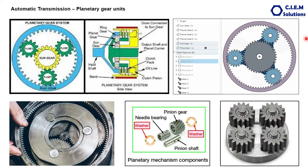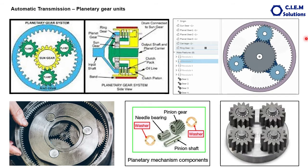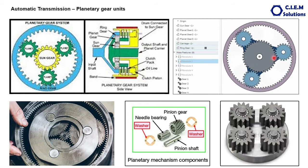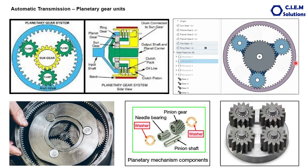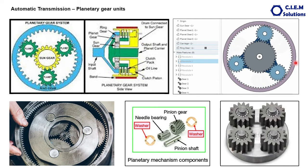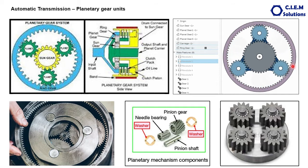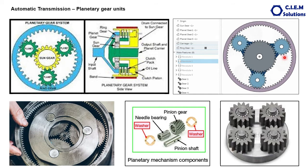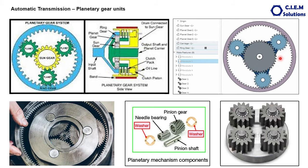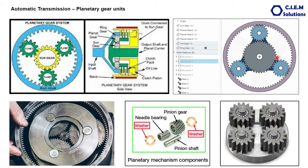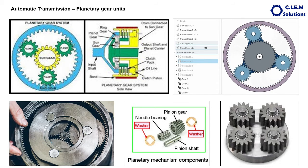So we have seen three components: mainly the sun gear, planetary pinions connected to a case, and the ring gear. The principle of the planetary gear is: if you give input to any one of these three elements, stall the second one, and the third one will be the output. The first, second, and third may be anything. And when you lock any two of these gears in the system, there will be no change in speed or direction — it will become a direct drive from input to output.